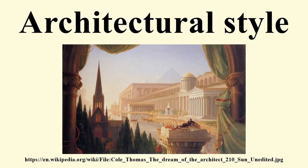During the Mannerist Renaissance period, architects experimented with using architectural forms to emphasise solid and spatial relationships. The Renaissance ideal of harmony gave way to freer and more imaginative rhythms. The best known architect associated with the Mannerist style was Michelangelo, who was credited with inventing the Giant Order, a large pilaster that stretches from the bottom to the top of a façade. He used this in his design for the Campidoglio in Rome. Prior to the 20th century, the term Mannerism had negative connotations, but it is now used to describe the historical period in more general non-judgmental terms.